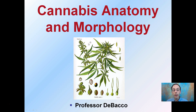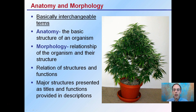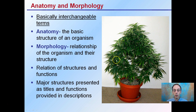Here we're going to look at some of the physical attributes of cannabis — the anatomy and morphology — basically referring to what you can physically see. The terms anatomy and morphology are basically interchangeable. Anatomy is the basic structure of an organism and morphology is the relationship of the organism and their structure. For our purposes these are interchangeable terms because we're looking at the relation of structures and their function.